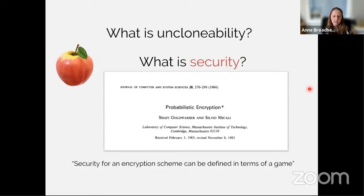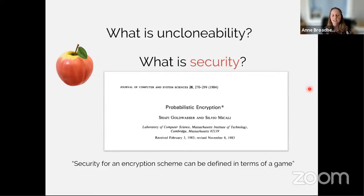The moral of Goldwasser and Micali's work is that security for an encryption scheme can be defined in terms of a game: describe precisely the parameters of the game, describe some parties, and formalize security in terms of the maximum winning probability of any adversary over all adversaries in that game. The game can differ based on what properties you're trying to show. That's the point of view we'll also use for unclonability — we'll have a game and bound the probability of the adversary winning.